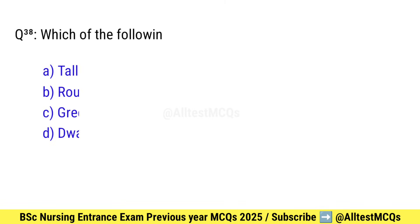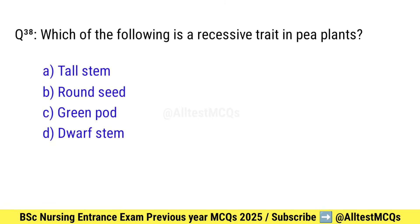Question number 38. Which of the following is a recessive trait in pea plants? Right option is D: Dwarf stem.